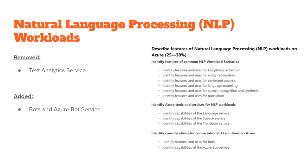The fourth objective, as I said, was basically a merge of conversational AI and natural language processing into one objective. The title still says natural language processing and it's worth 25–30% now. They've removed a couple of details in terms of text analytics services, and they've added the things about bots and Azure Bot Service that was in the conversational AI section. The rest of the conversational AI content has been removed.